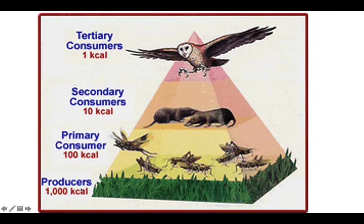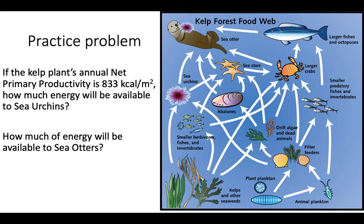Here's another picture of an energy pyramid showing primary, secondary, and tertiary consumers with actual values: 1,000 kilocalories to plants, only 100 for the primary consumers, 10 for the secondary, and only 1 for the tertiary consumers. Now try this practice problem using the kelp forest food web. If the kelp plant's annual net primary productivity is 833 kilocalories per meter square, how much will be available to the sea urchins? The sea urchins are only one energy transformation away — they're going to get 10%, which is 83.3 kilocalories. And the sea otters get 10% of that: 8.33 kilocalories. So they have to eat a lot of sea urchins to get the same amount of energy as the sea urchins get from eating the kelp.